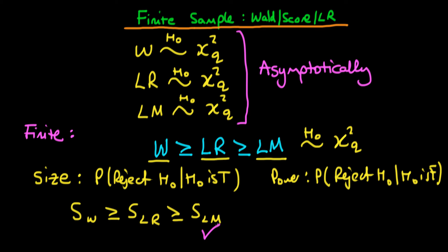In terms of size, we would prefer to use the LM statistic. If we compare them in terms of power, we find exactly the same relationship: the power of the Wald statistic is greater than or equal to the power of the LR statistic, which is in turn greater than or equal to the power of the LM statistic. The reason is that since the Wald statistic is greater in value, we reject H0 more often anyway, which is why the power is largest for the Wald. So in terms of power, we would prefer to use the Wald statistic. The difference in power is due to their difference in size.